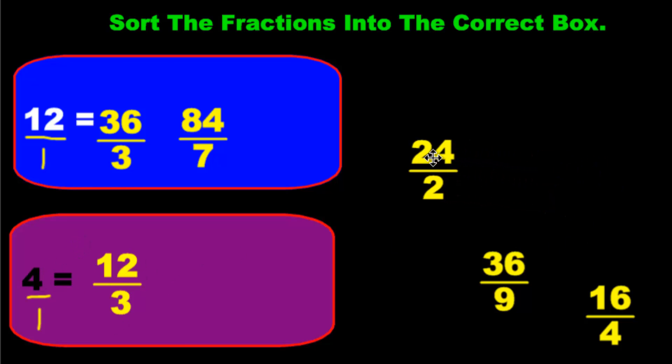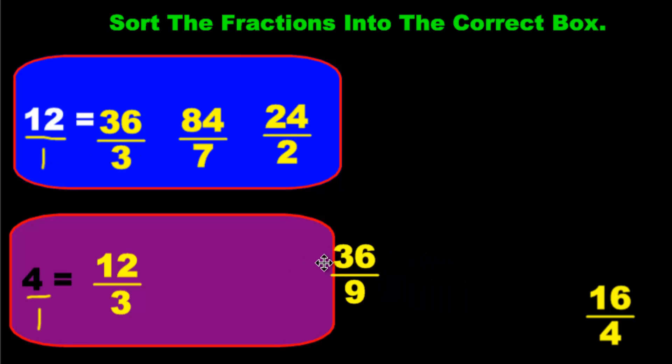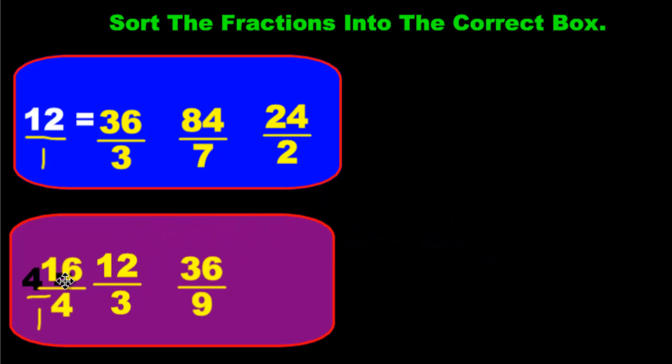Okay, how about 24 over 2? That's going to match up with the top, right? Double the 1, double the 12. It works. 36 over 9. It's going to go to the bottom. 1 times 9. 4 times 9. They both make the right numbers here. How about 16 over 4? Yes, the bottom.